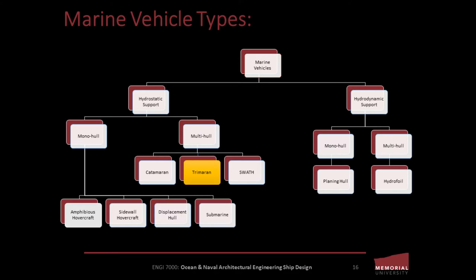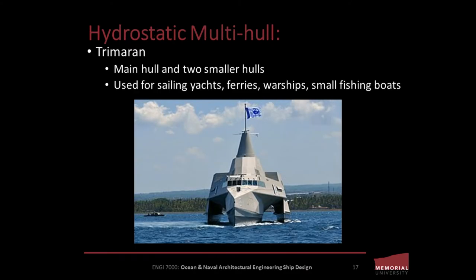A trimaran, or double outrigger, is a multi-hull boat comprising a main hull and two smaller outrigger hulls which are attached to the main hull with lateral beams. Most modern trimarans are sailing yachts designed for recreation or racing. However, they are also in use in applications for ferries, warships, and traditional small fleet fishing boat designs in southeastern Asia.